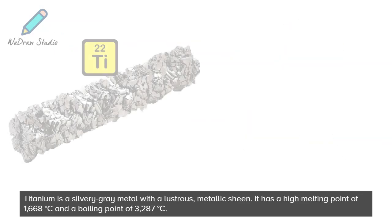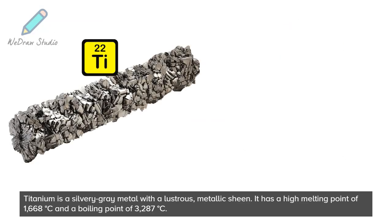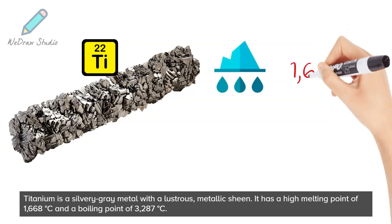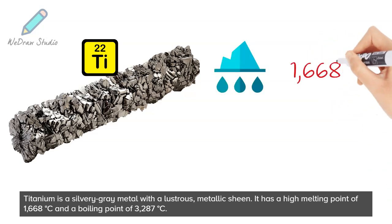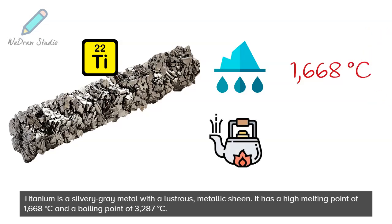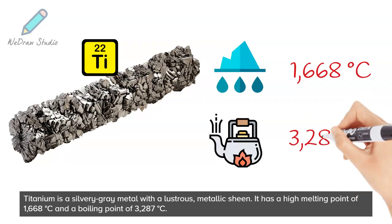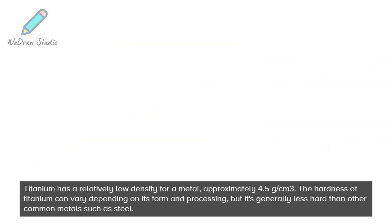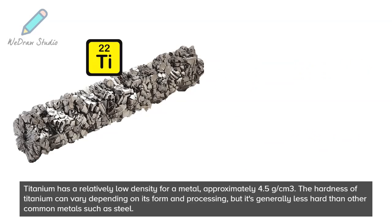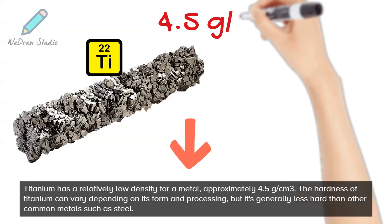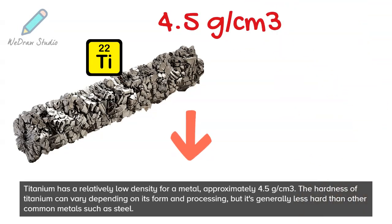Titanium is a silvery-gray metal with a lustrous metallic sheen. It has a high melting point of 1,668 degrees Celsius and a boiling point of 3,287 degrees Celsius. Titanium has a relatively low density for a metal, approximately 4.5 grams per cubic centimeter.